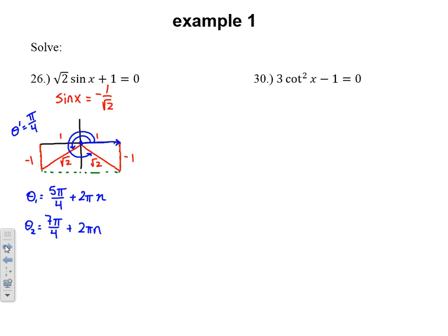Let's try number 30. Again, we want to isolate the trig function. We've got 3 cot²x - 1 = 0. Let's add 1 and divide by 3. Cotangent squared of x is 1/3. If I take the square root of both sides, cotangent of x is plus or minus √(1/3), or ±1/√3. To better help me draw the reference triangles, I'm going to use a reciprocal identity. I like to revert to sine, cosine, or tangent. That means tangent is ±√3/1.